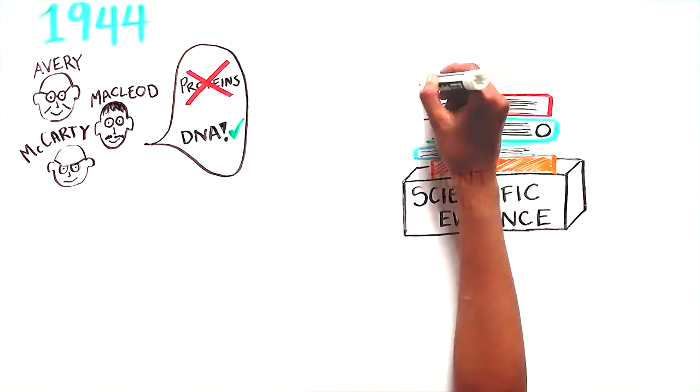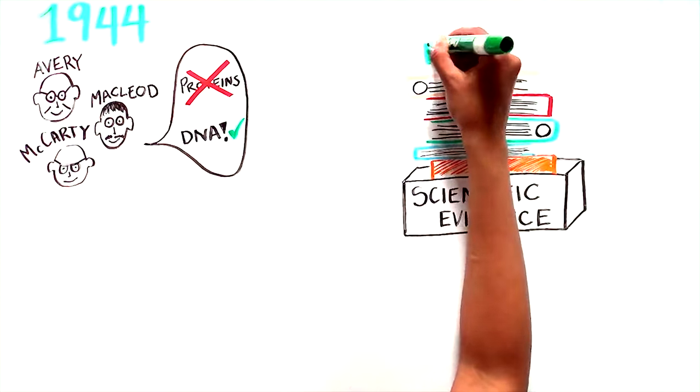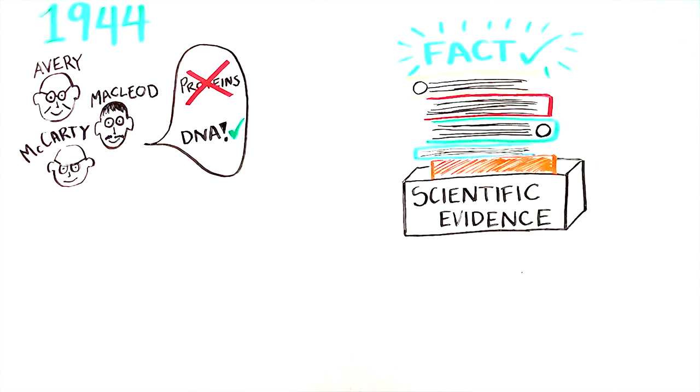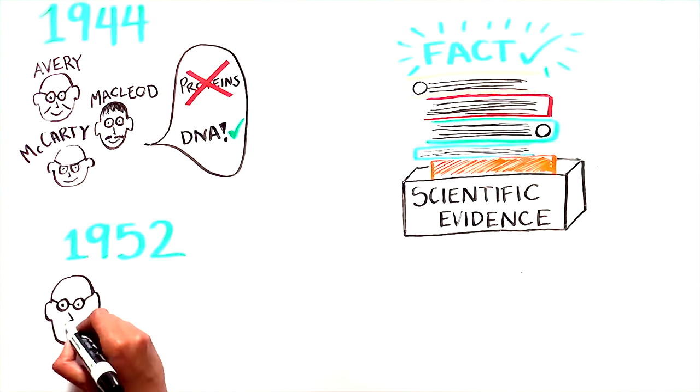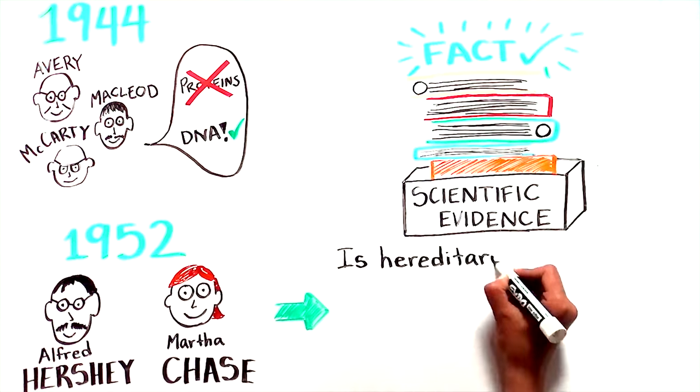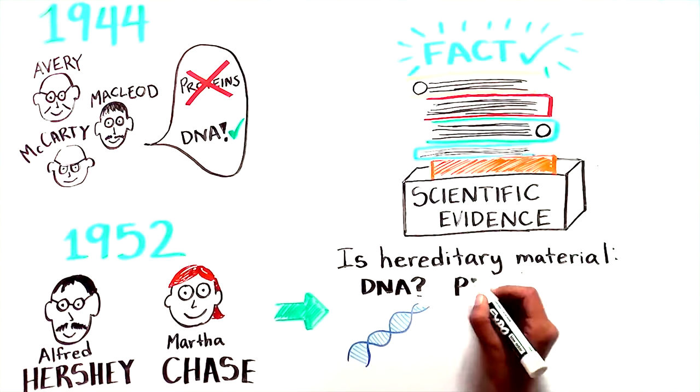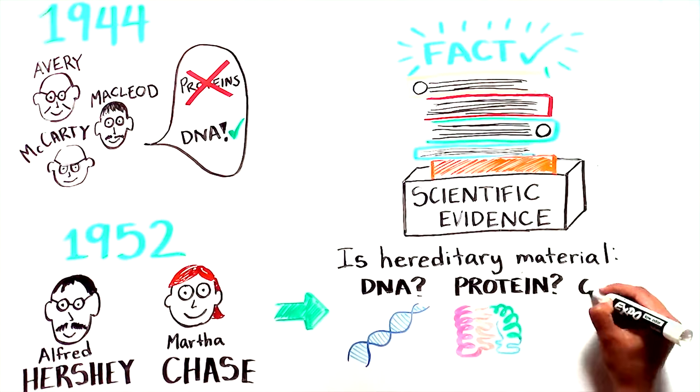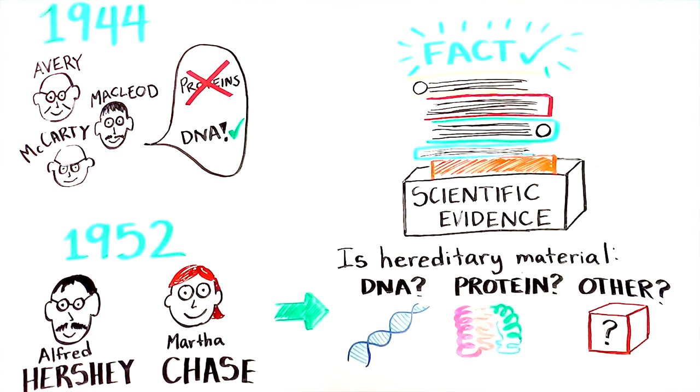In science, a great deal of evidence is needed before a new scientific idea is accepted as fact. Therefore, in 1952, Alfred Hershey and Martha Chase carried out experiments which addressed a similar question. Was DNA the hereditary material? Or was it protein? Or was it something else?